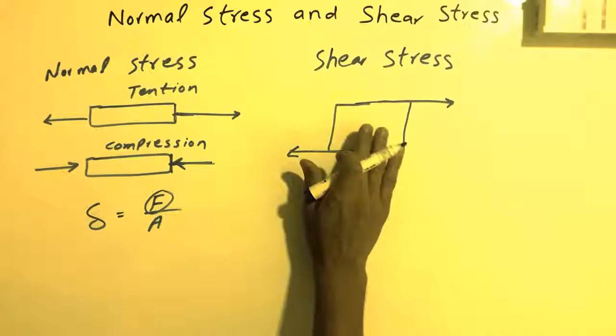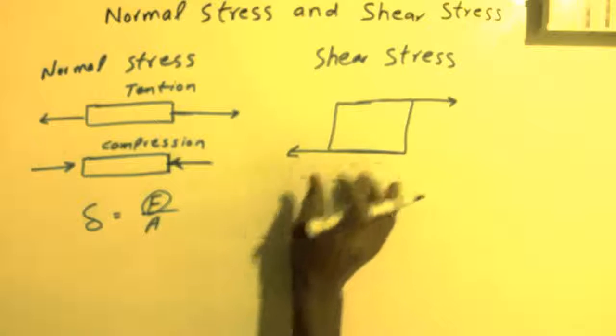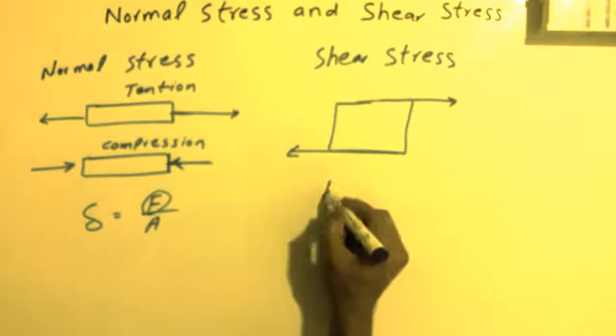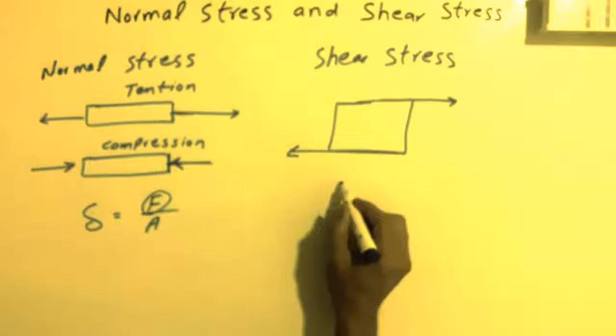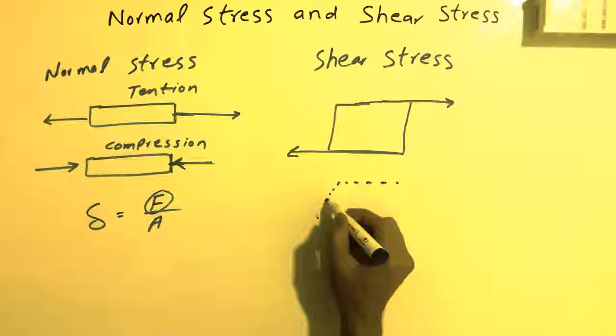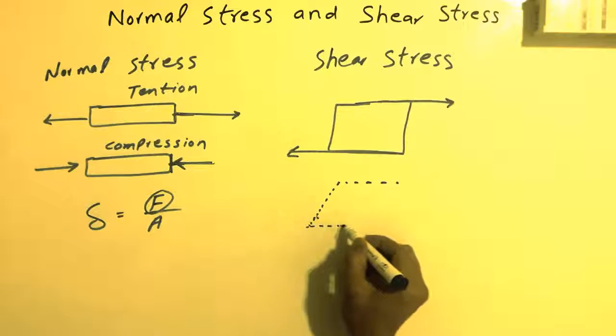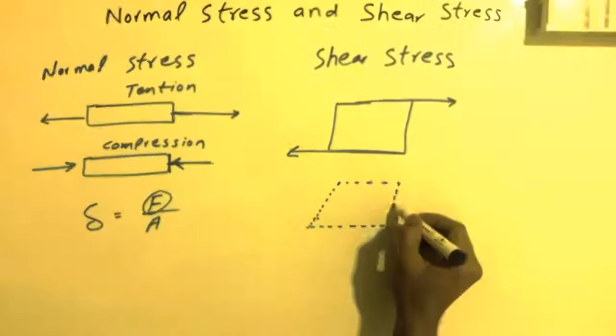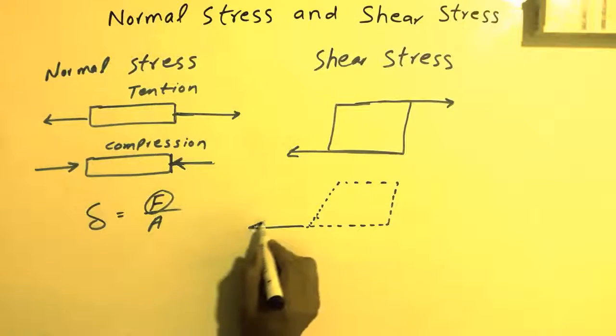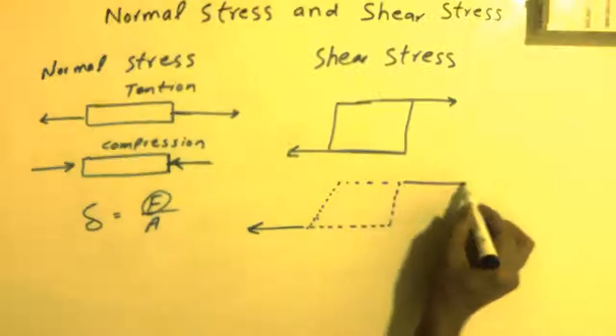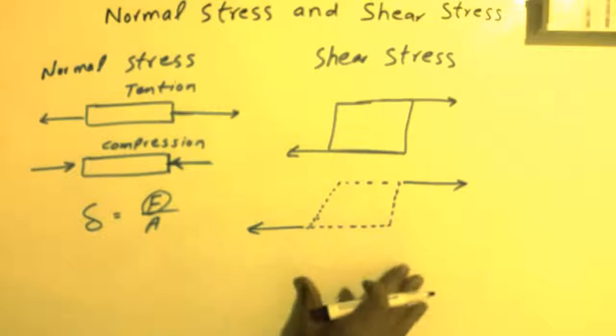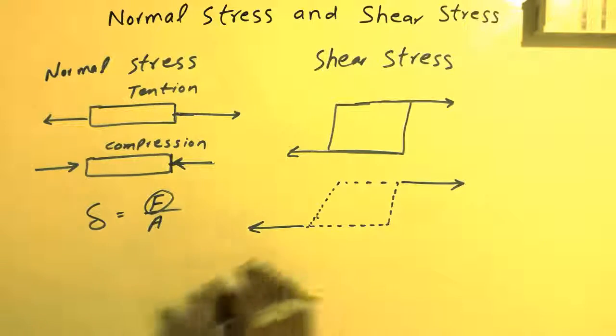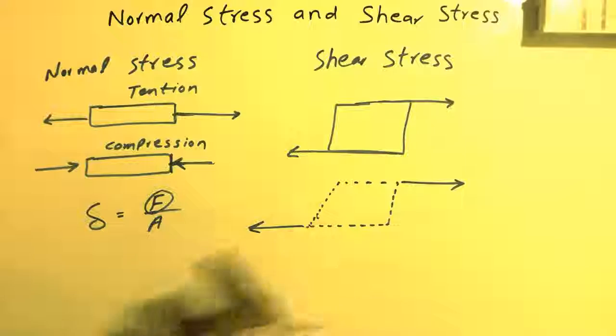If we imagine when the force acts on such type of block, it will deform like this because the force is acting in opposite directions, and our member will deform.